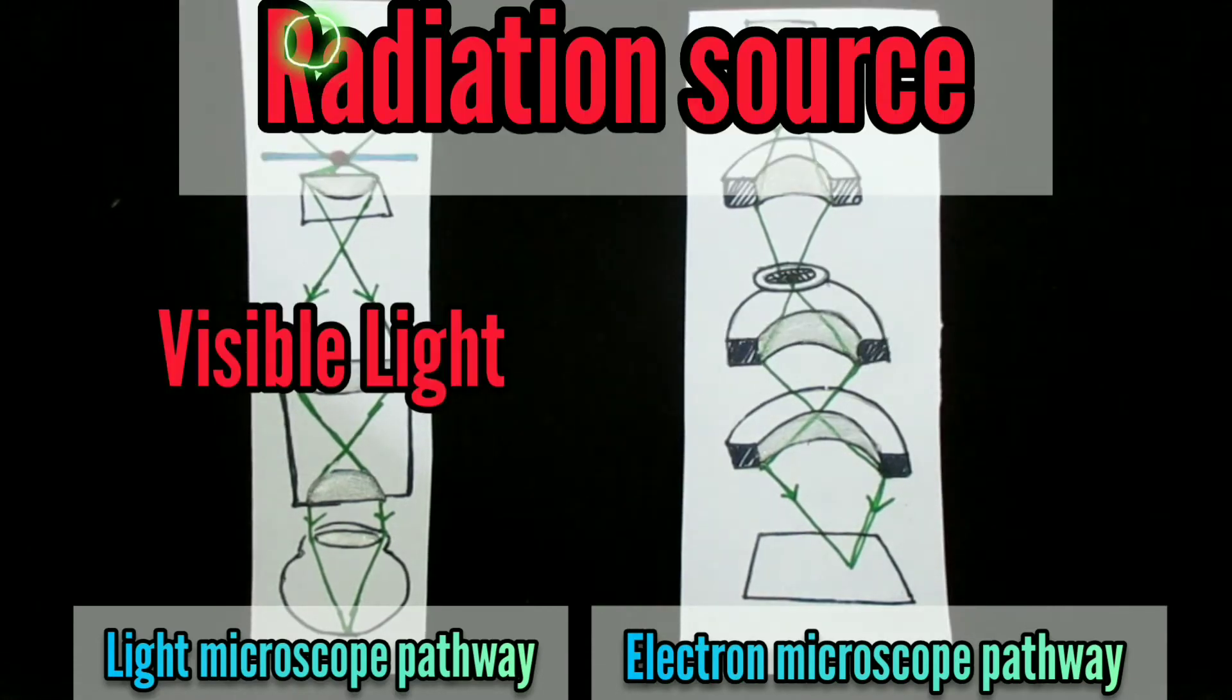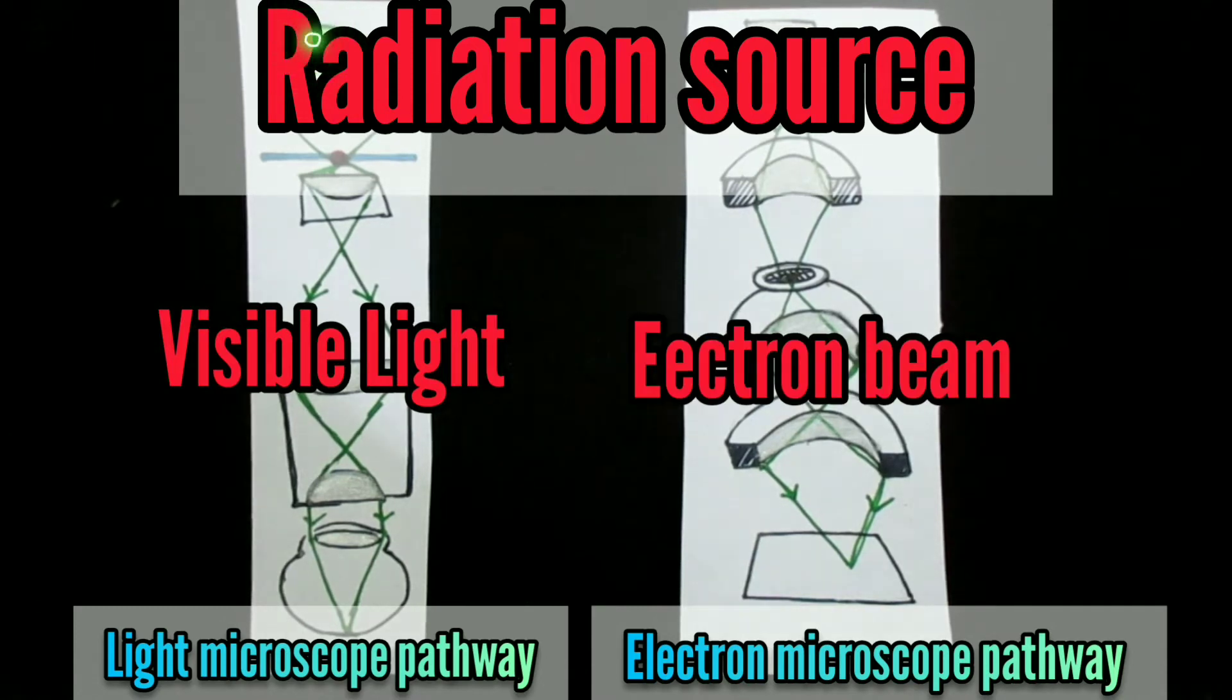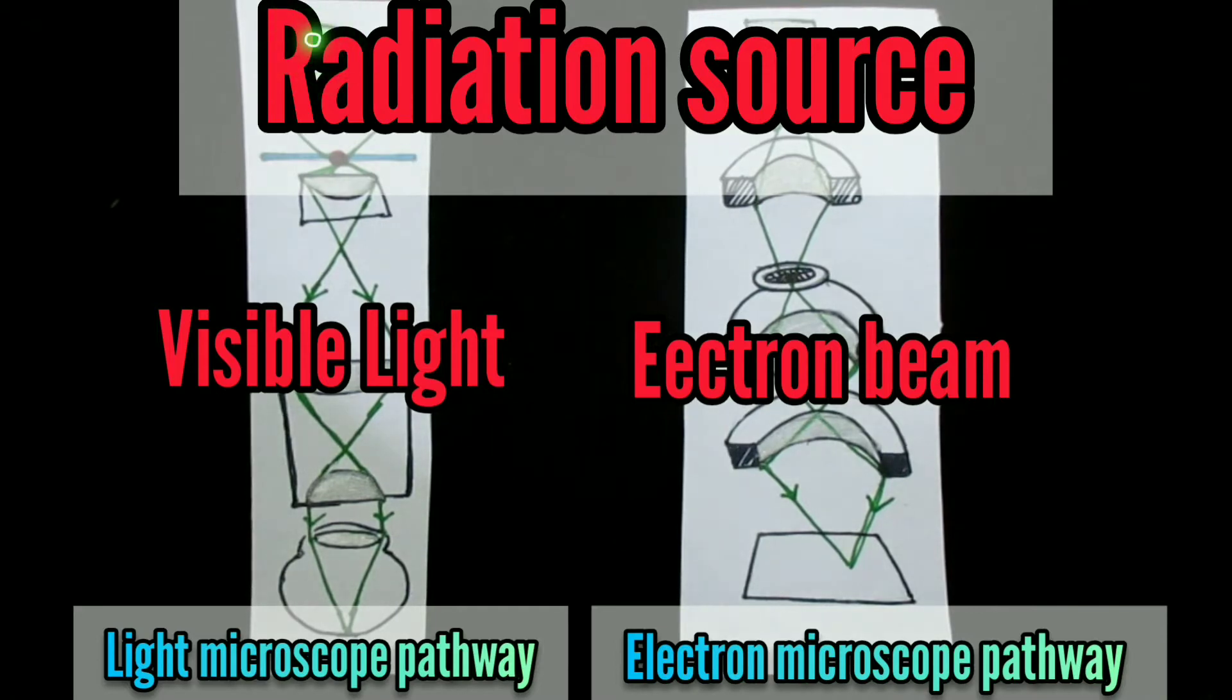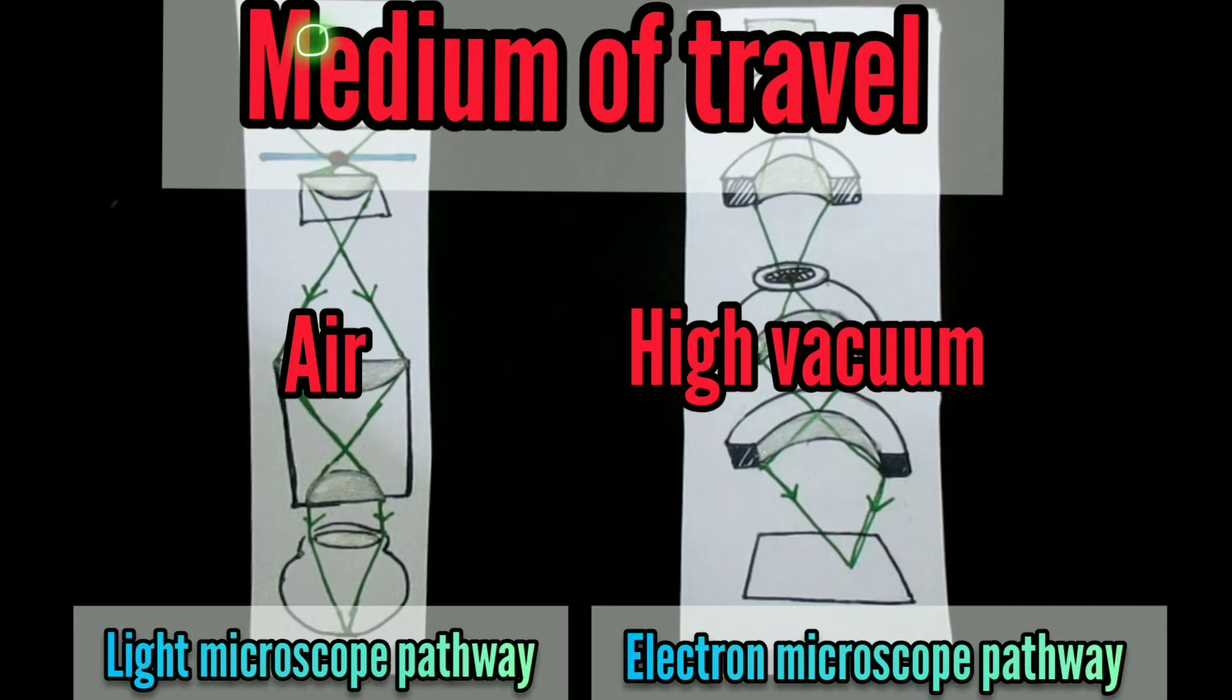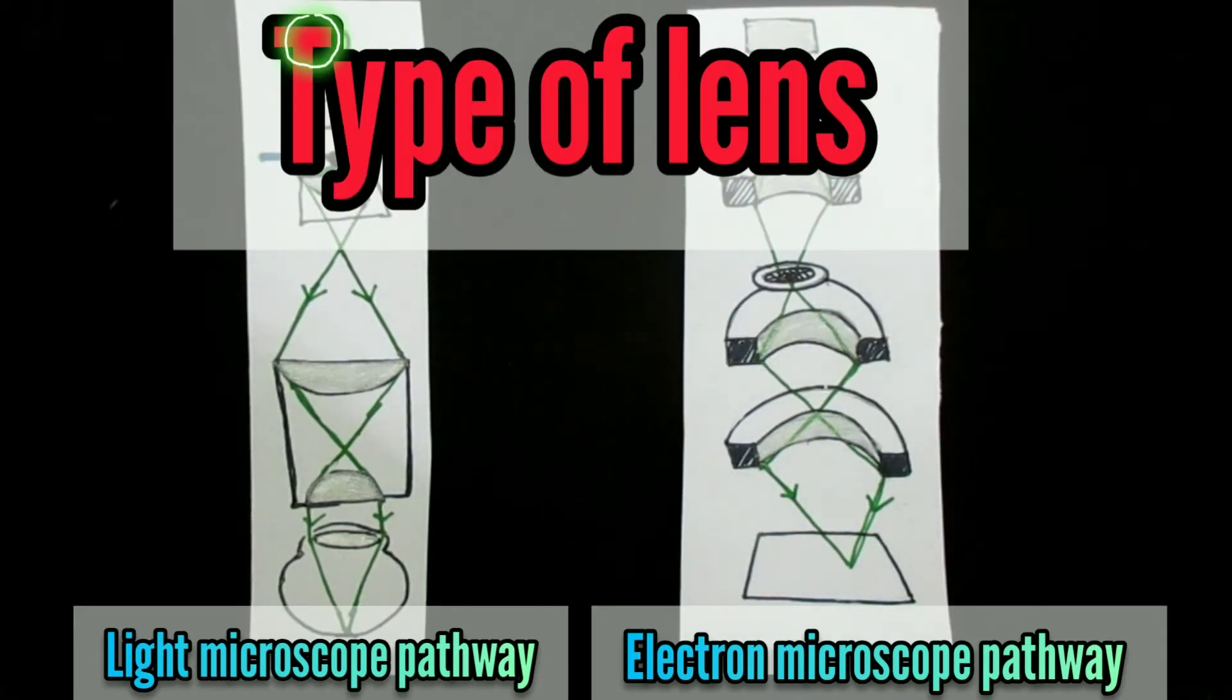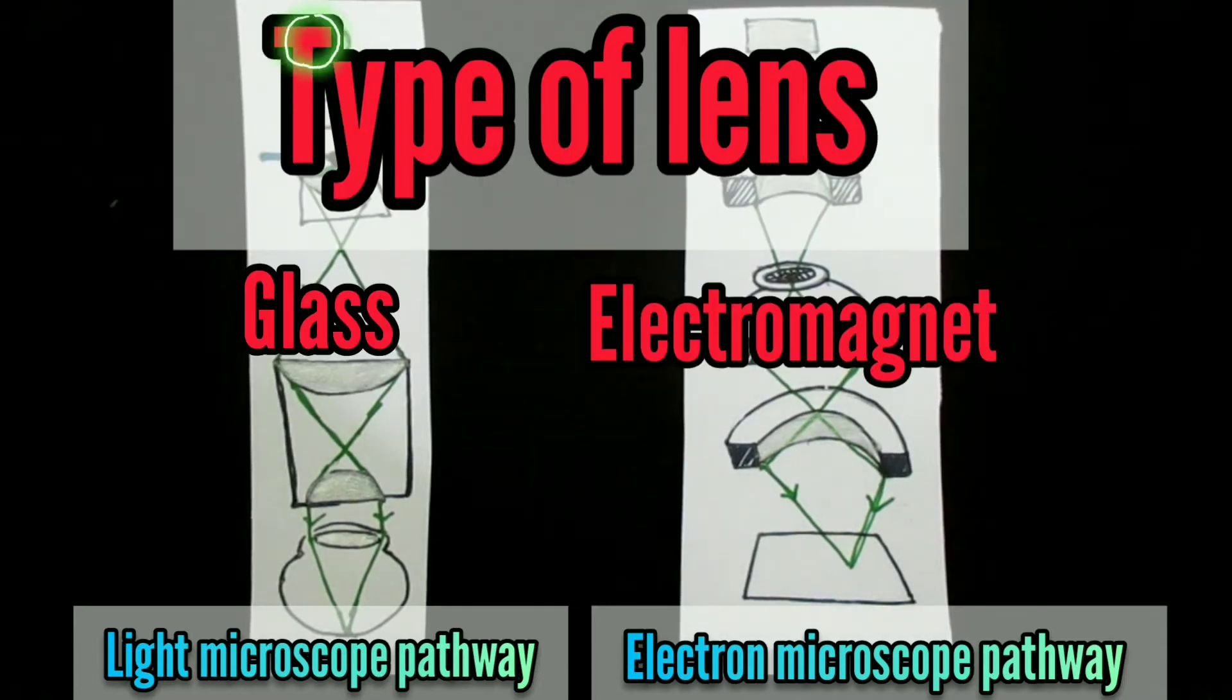The radiation source is visible light in case of light microscope and electron beam is used in electron microscopes. The medium of travel is air in light microscopes and high vacuum is needed for electron microscopes. The lens is glass in case of light microscopes and electromagnets are used in electron microscopes.